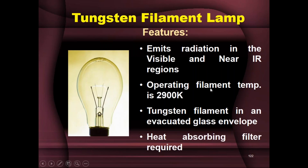When using this lamp as a source for visible radiation, the IR radiations are interfering. We cannot use them because they cannot be detected with the same detector as visible radiation — UV and visible together can be detected by the same detector, but IR needs different detectors. Also, 80% of the radiation emitted by this lamp is in the near-IR region, and only the remaining 20% is emitted in the visible region, which is why the intensity is not very high.